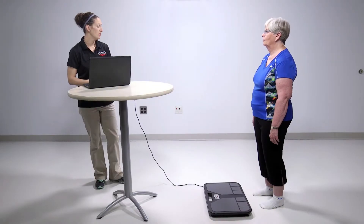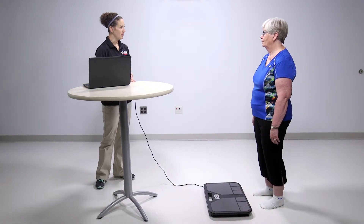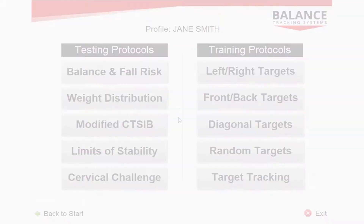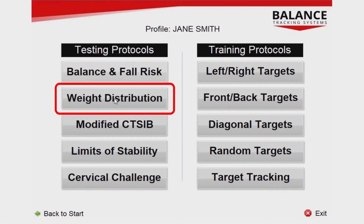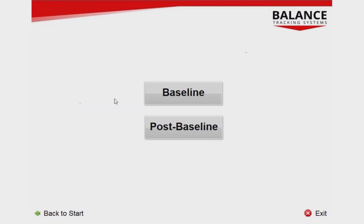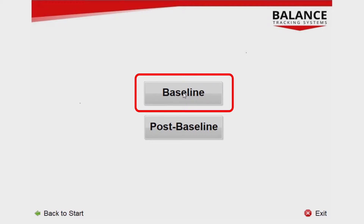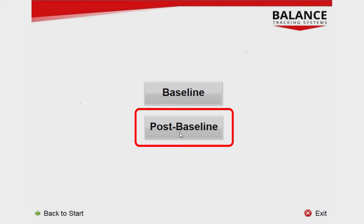This video picks up where the BTRAX Testing Setup video left off. From the Protocol Selection screen, press the Weight Distribution button to begin. On the following screen, you are given two options. If this is the first test you are conducting on an individual, select Baseline to establish a reference value for all future testing. If this is a follow-up test to be compared to baseline results, press Post Baseline.